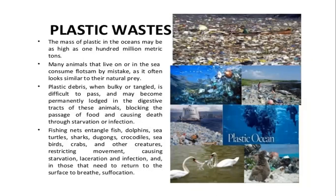Plastic waste is one of the most dangerous pollutants. The mass of plastic in the ocean may be as high as 100 million metric tons. Many sea animals consume plastic by mistake, as it often looks similar to their natural prey. Plastic debris, when ingested, is difficult to pass and may become permanently lodged in the digestive tracts of animals, blocking food passage and causing death through starvation or infection. Fishing nets entangle fish, dolphins, sea turtles, sharks, dugongs, crocodiles, seabirds, crabs, and other creatures, restricting movement, causing starvation, infection, and suffocation in those that need to return to the surface to breathe.